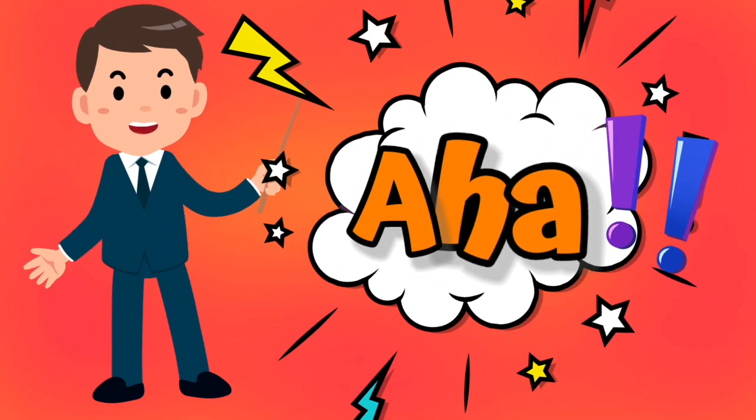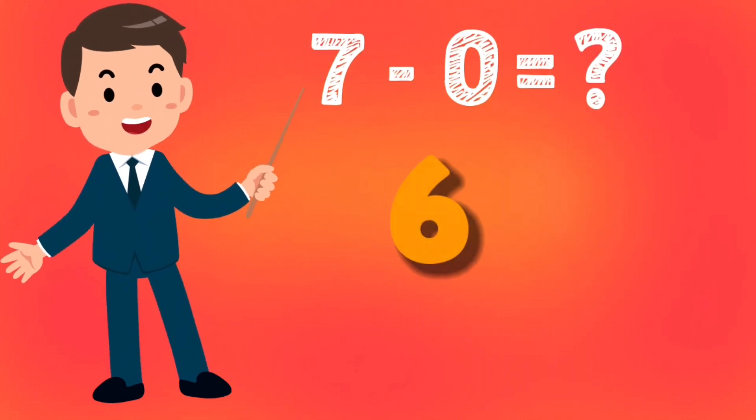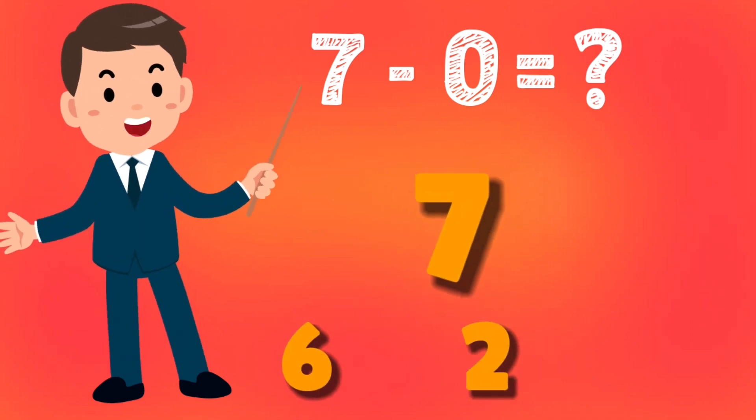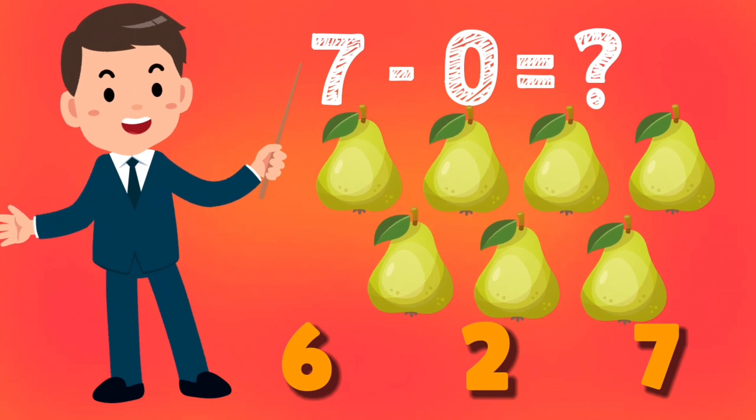You made it! Let's go ahead and solve the last question. Seven minus zero equals how much? Is it six, is it two, or is it seven? Let's find out. Seven pears minus zero, that means nothing to be removed, so the answer is seven.